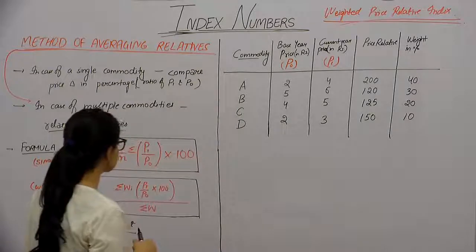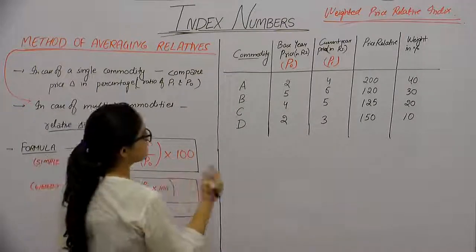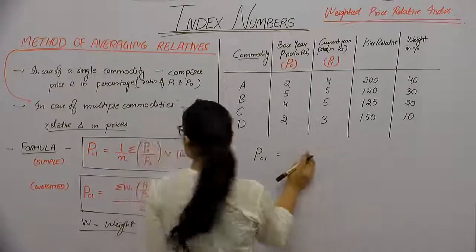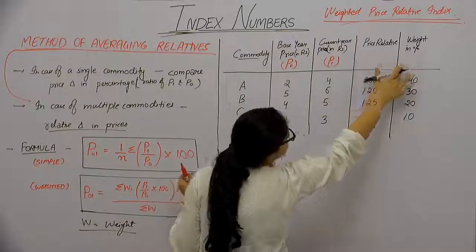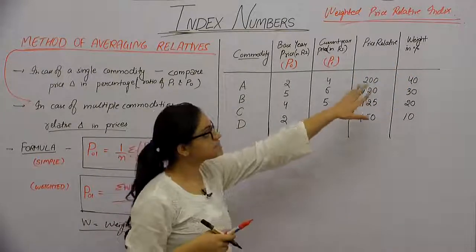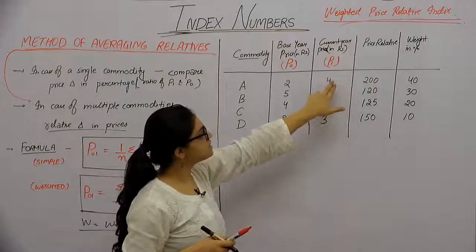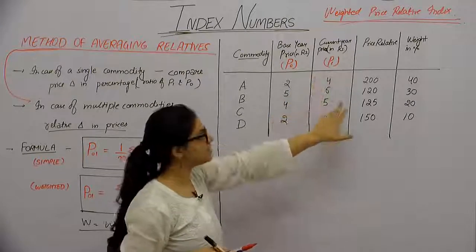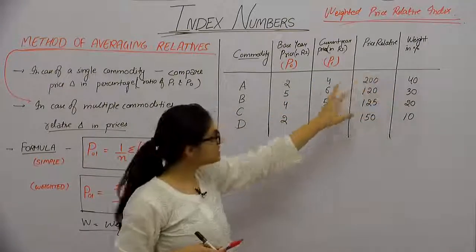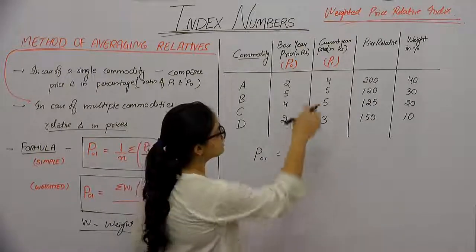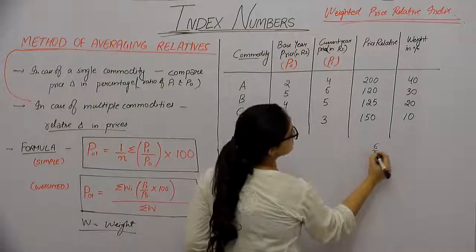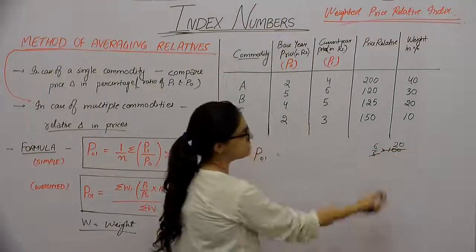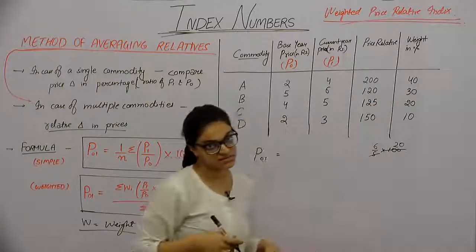We use the weighted price relative index. We need to multiply the price relative by the weight. Looking at the column of price relatives: P1 upon P0 — for example, 4 divided by 2 equals 2, multiplied by 100 gives 200 as the price relative. Similarly, 6 by 5 into 100 gives 120 as the price relative.